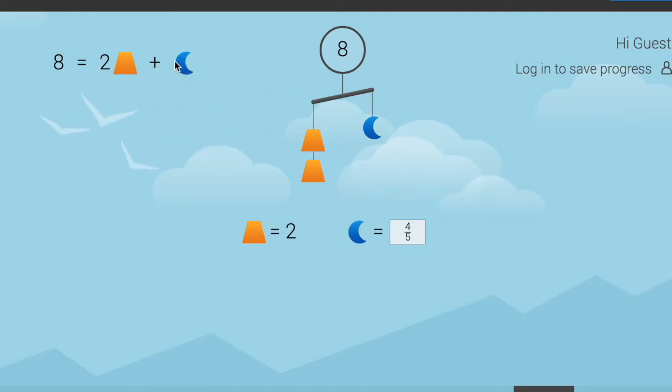Two times these things plus one of those things equals eight. And you can also drag individual bars off to the side to see what they look like in equation form. Two times trapezoid equals two trapezoids are balanced with a moon.